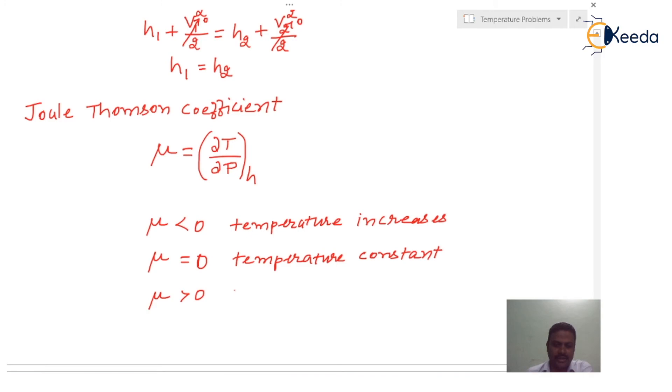When μ is greater than zero, temperature decreases during a constant enthalpy process, that is throttling.